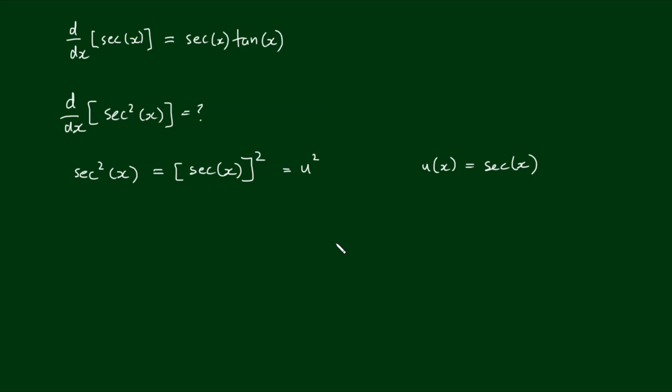So in order to differentiate the secant squared of x, my first strategy would be to use the chain rule. The chain rule being dy/dx equals dy/du times du/dx.